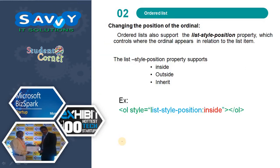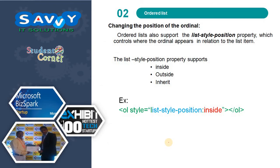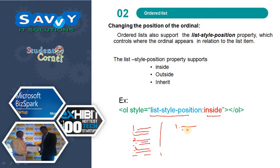Next, changing the position of the ordinal: previously we used list-style-type. Similarly, here we need to change list-style-position, which can be inside, outside, or inherit. Inside means the ordinal prints inside the content box; outside means it prints outside.